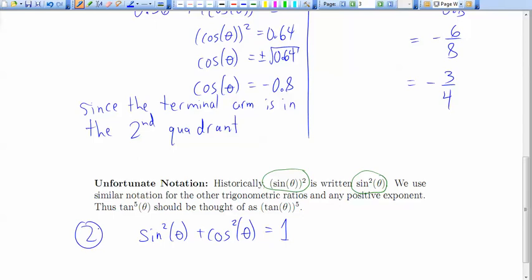And of course it doesn't just apply to squares. If you have, say, tan 5 theta, what they really mean by that is take the tangent of theta first, and then raise it to the exponent 5, whatever that happens to be. So, we'll talk next about some more identities, but for now, practice some problems involving these two key ideas and make sure you memorize them. Thank you.